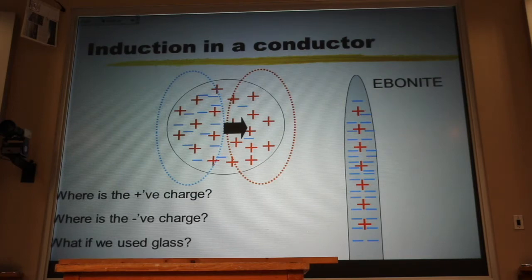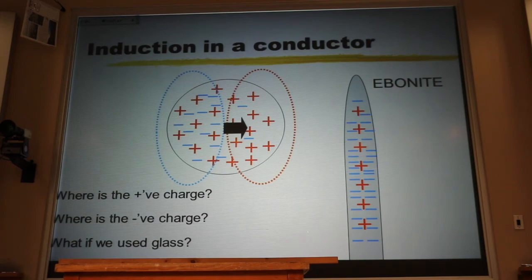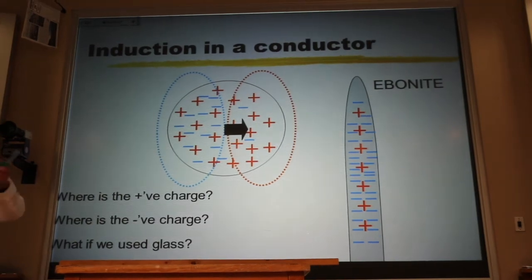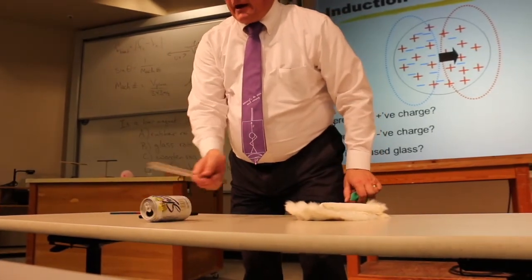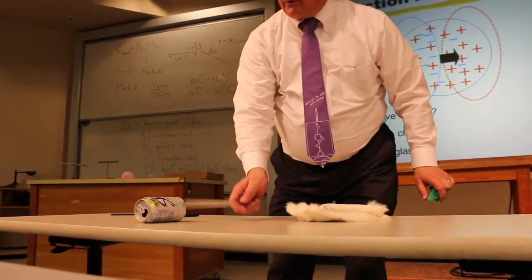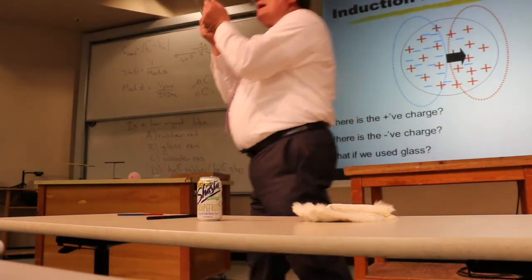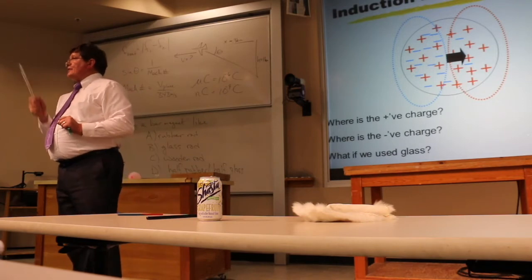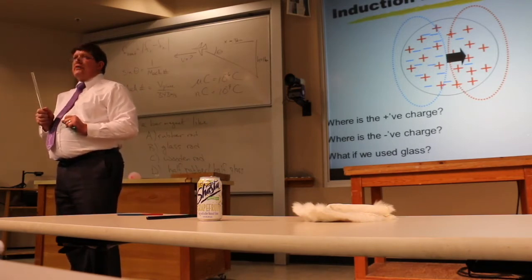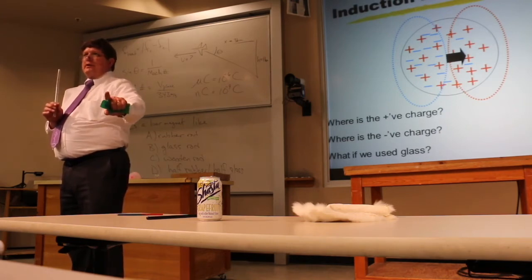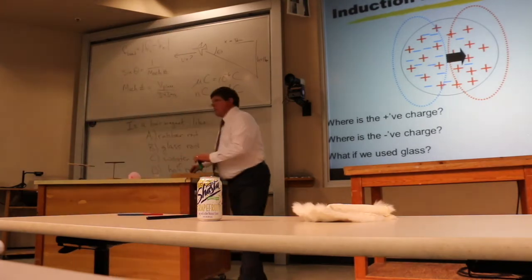Now what if I had used a glass rod instead? Well, you know what the answer is, I still get an attraction. But now, since it's the electrons that move, the electrons must be moving the opposite way that they were with the rubber rod. But still, the side that's closest to the rod is the attractive force, and it dominates. You always get an attraction when you're dealing with a neutral object. Always. You never find a repulsion.